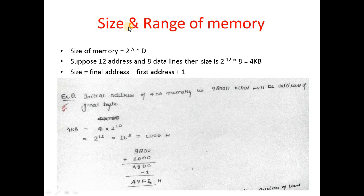To find the range of memory: size = final address − first address + 1, therefore final address = size + first address − 1. For example, if the initial address of a 4KB memory is 9800H, then the final byte address = 4KB + 9800H − 1.